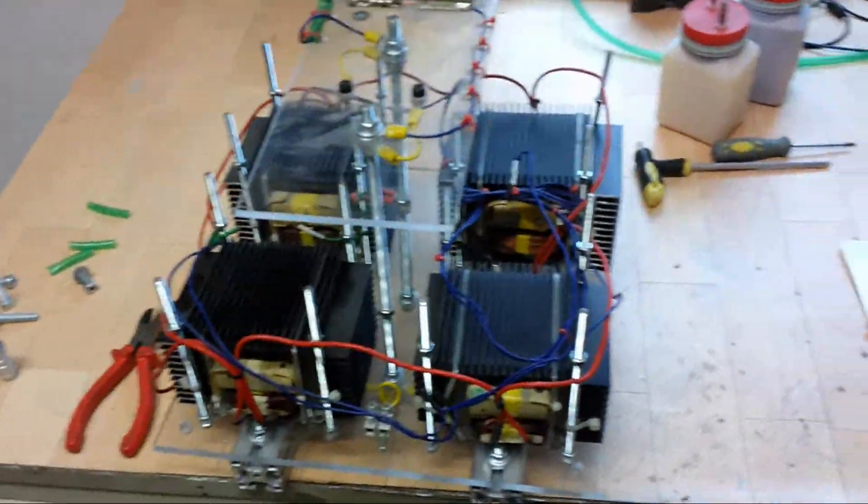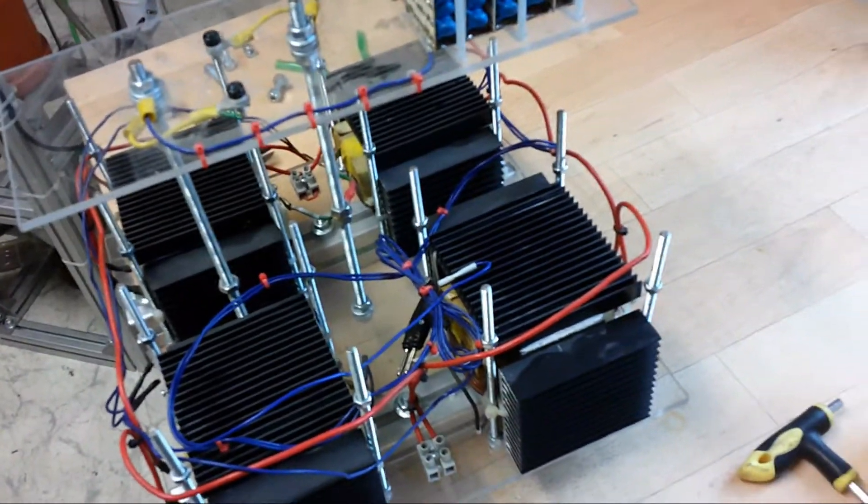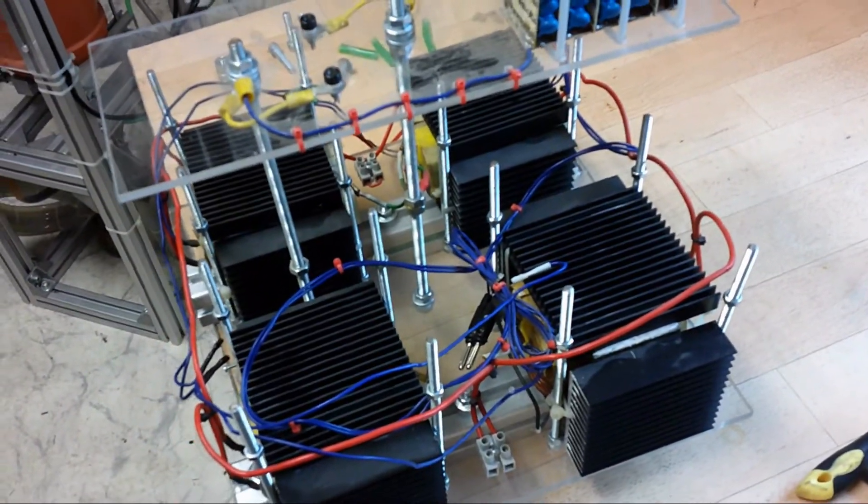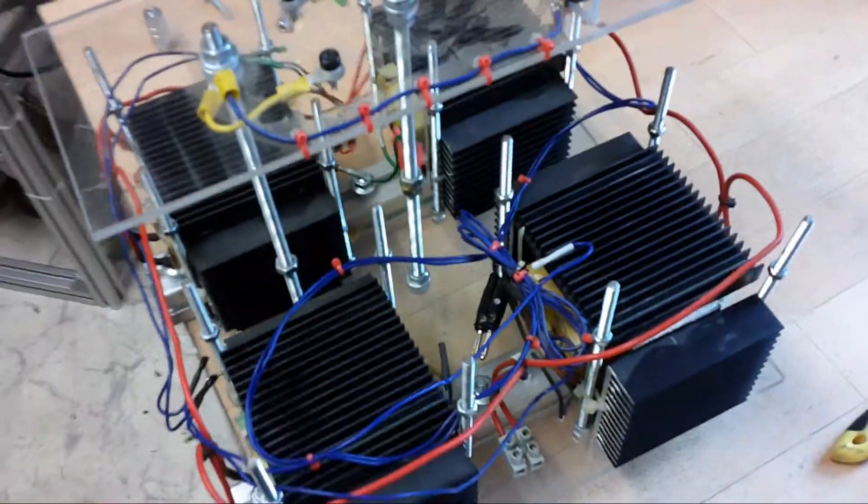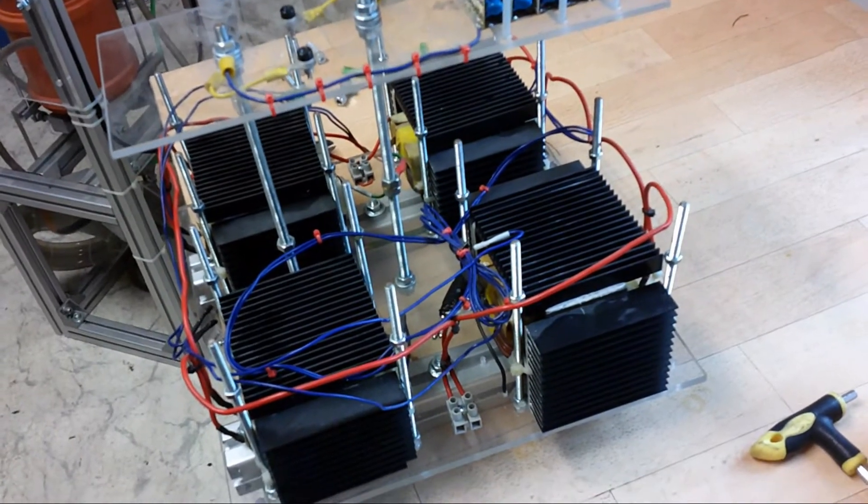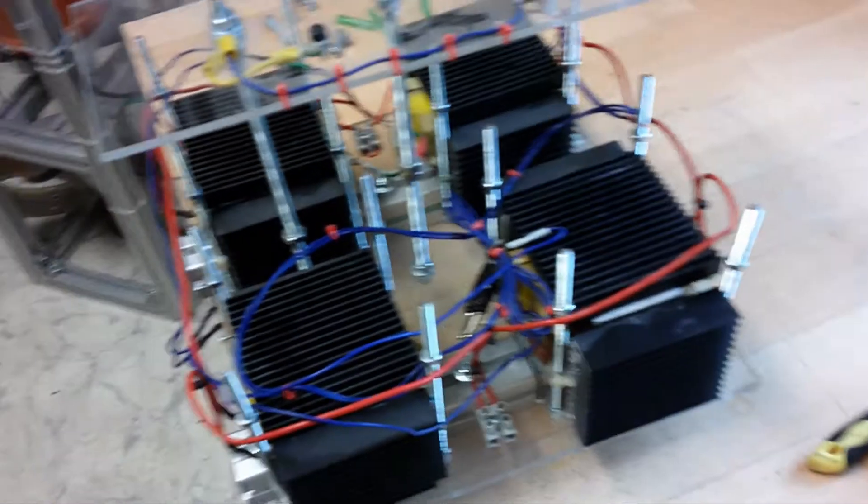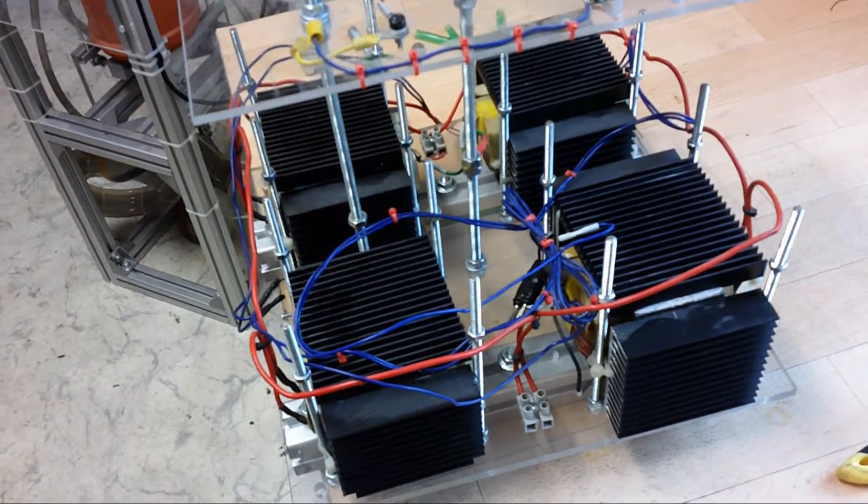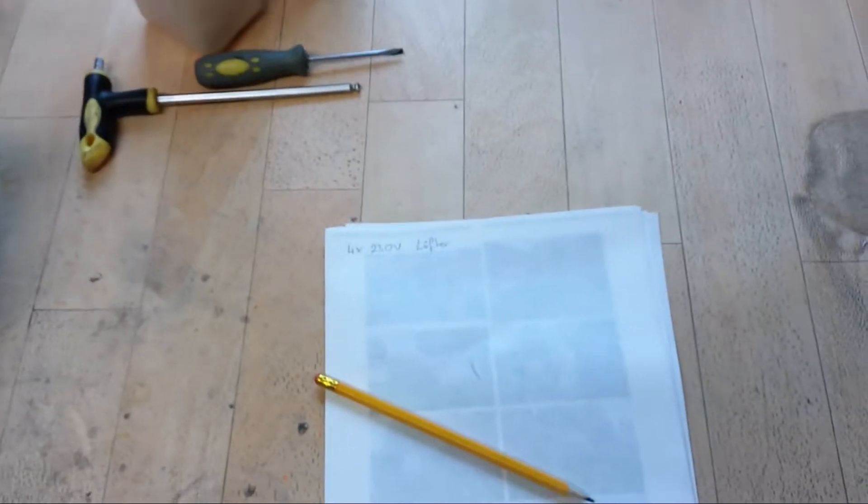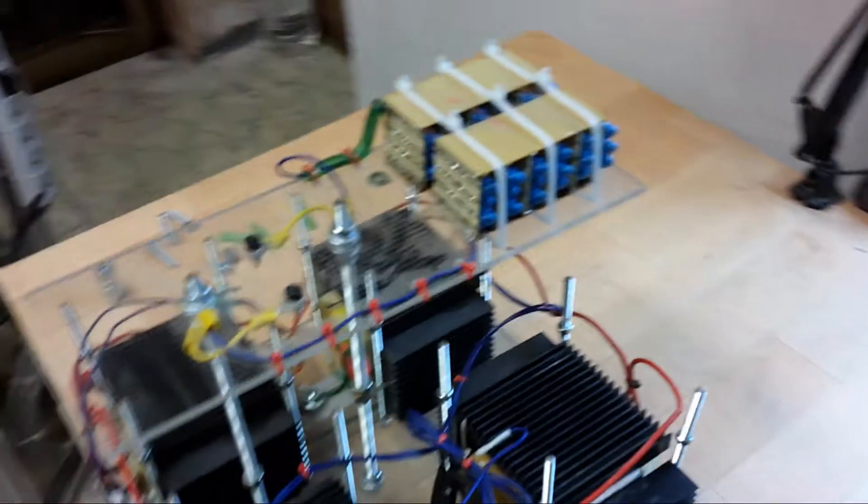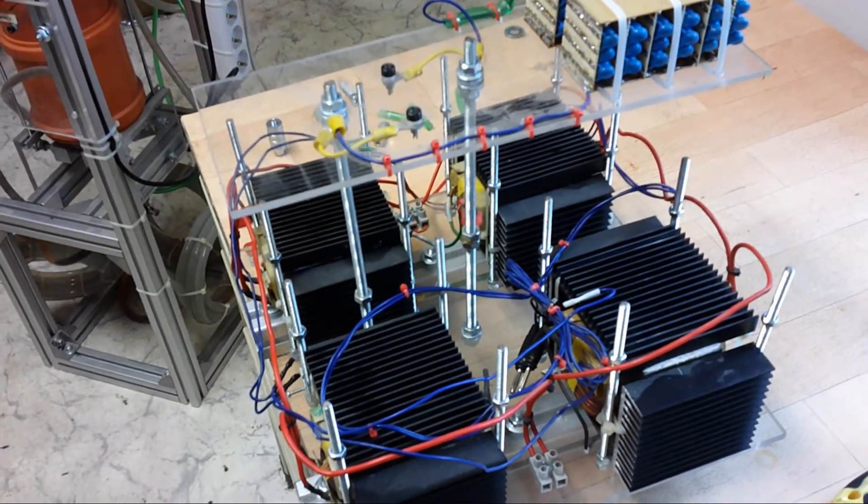So here I have disassembled the first part. That is, as I already told, the low-frequency high-voltage supply made out of microwave transformers. Apparently for other projects I have needed the coolers, so I have to buy new ones. Currently I am making a list of everything that I need to buy to make this device functional again.